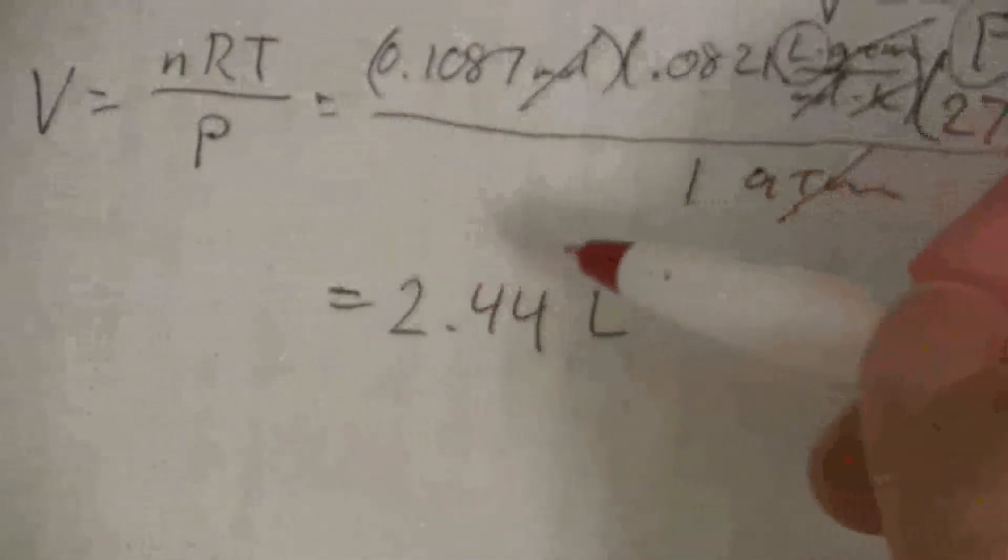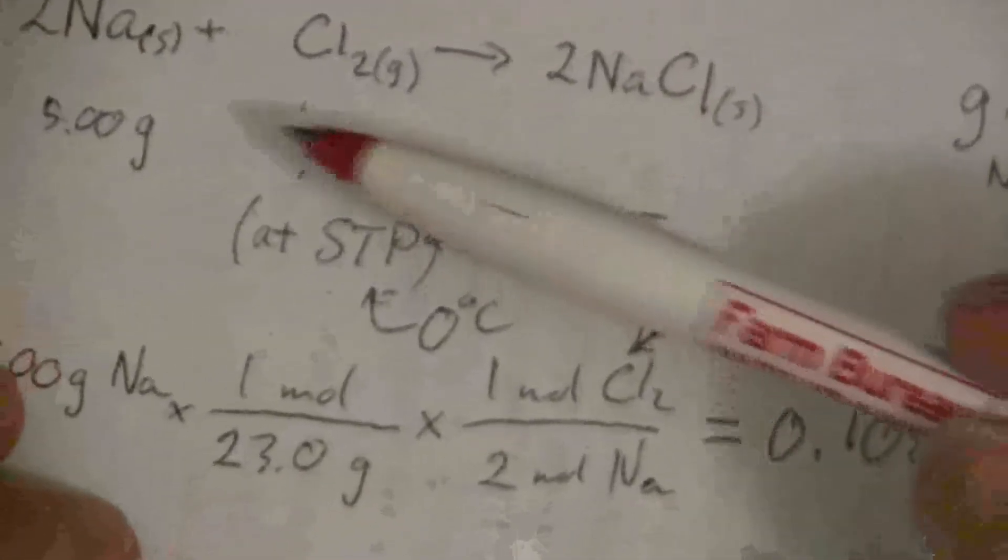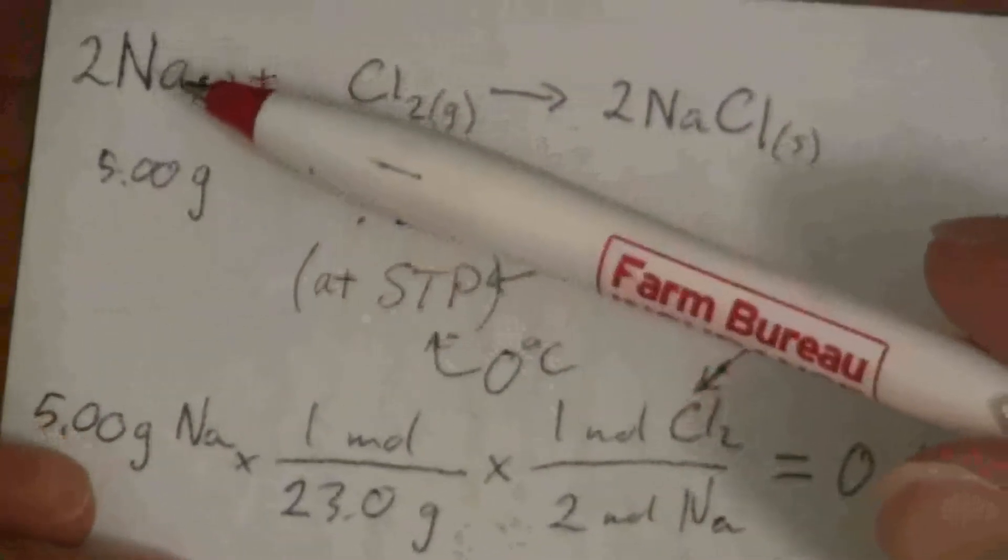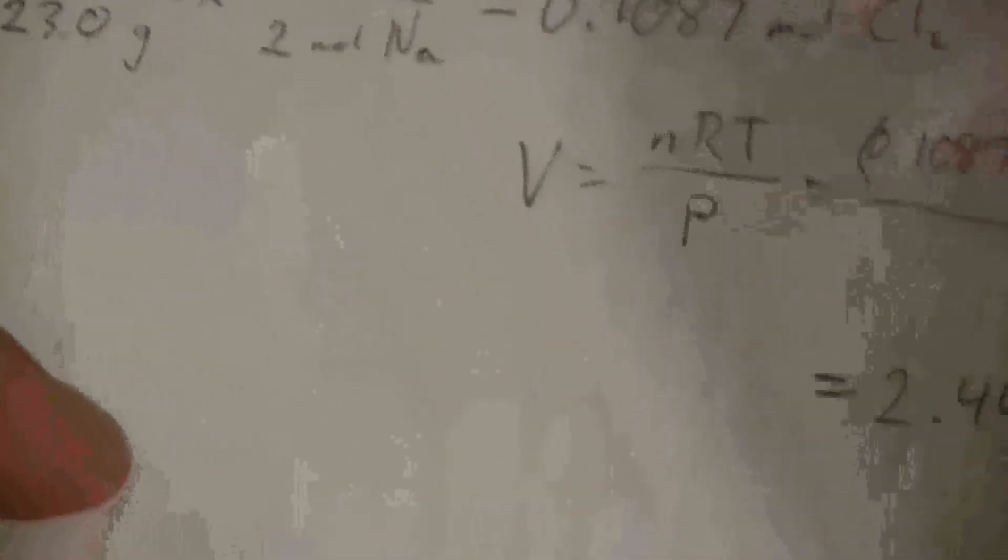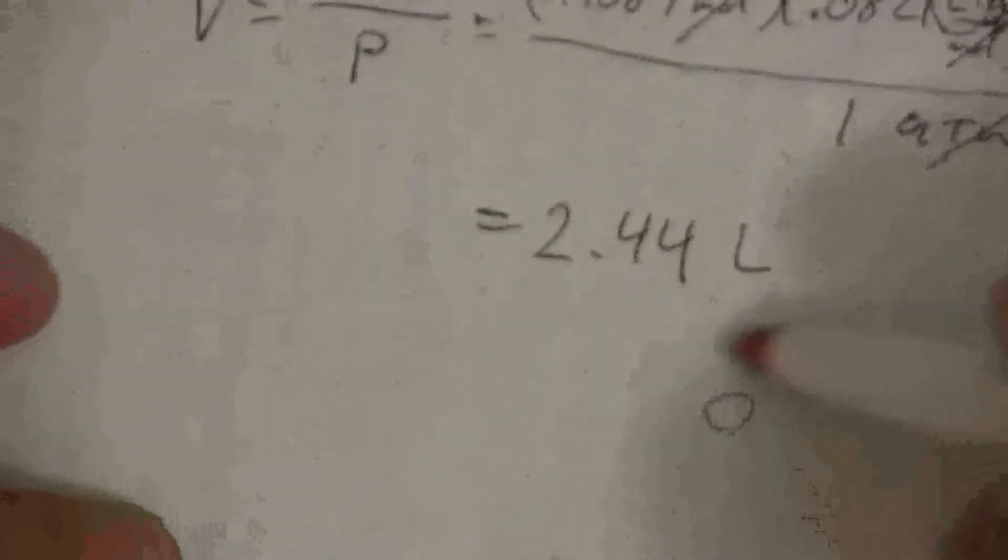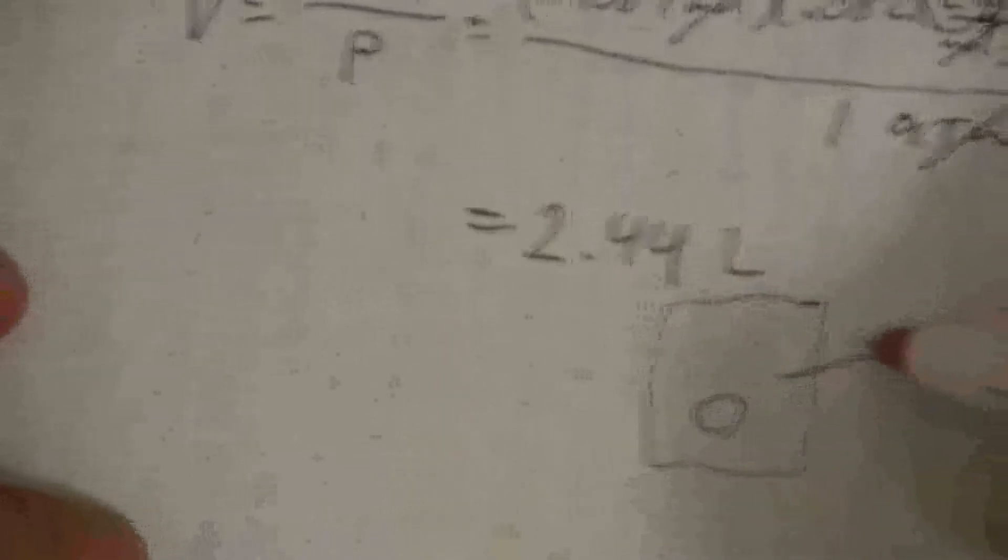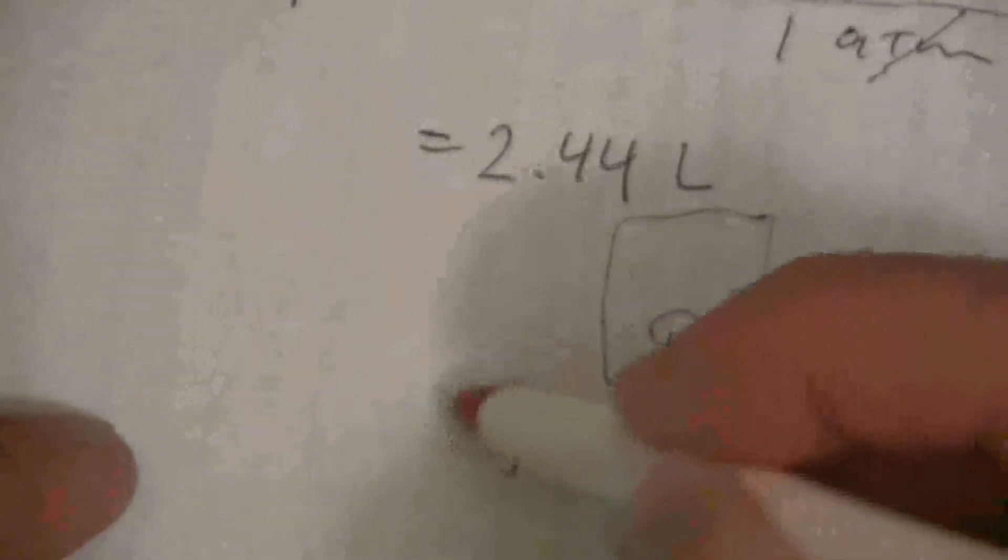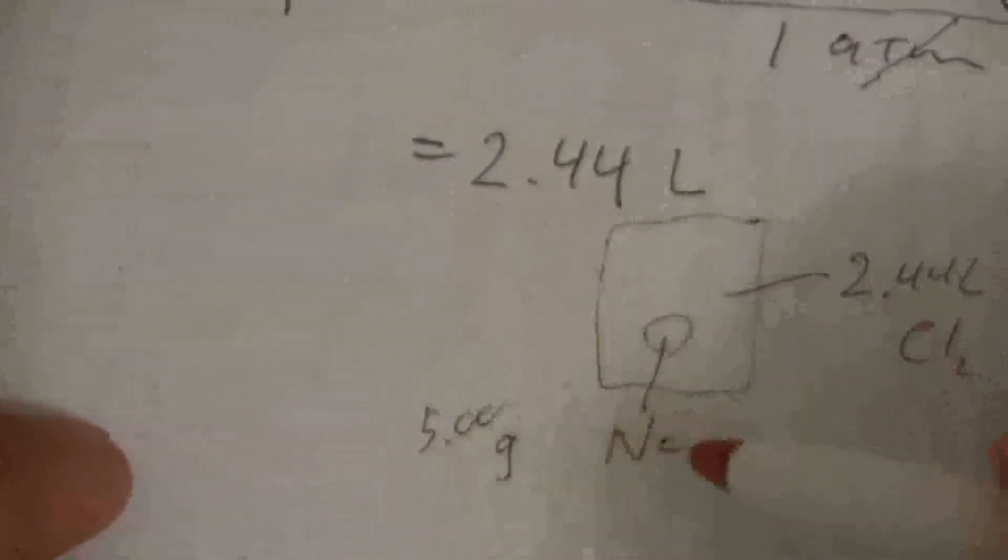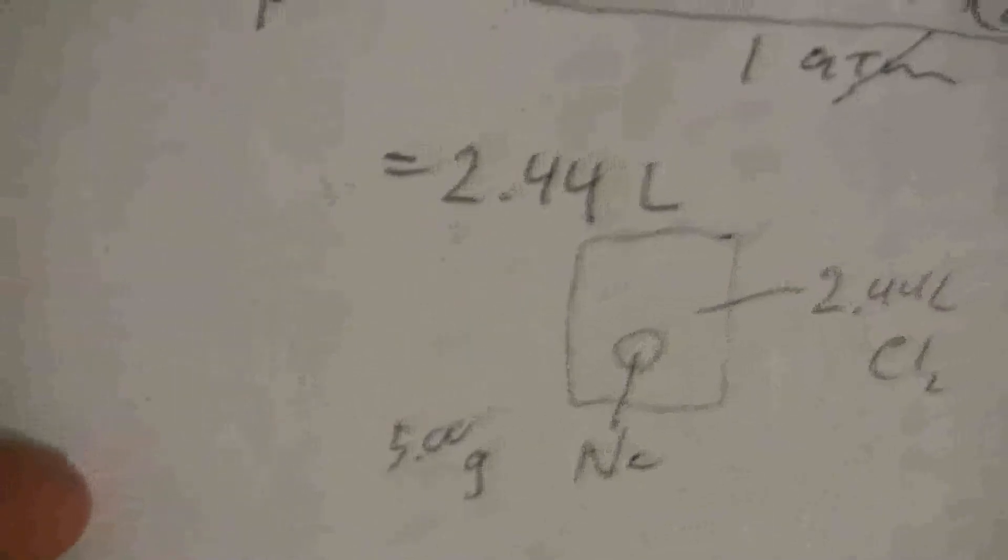So this would be the volume of gas, of chlorine gas, that I would need to react with 5 grams of sodium at standard temperature and pressure. So I would need that size of a container to have 5 grams of sodium inside with 2.44 liters of chlorine gas. That's how that would work: 5 grams of sodium with a container that has 2.44 liters of chlorine.